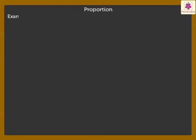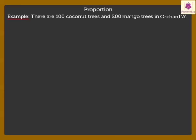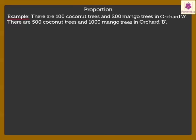Let's look at an example. There are 100 coconut trees and 200 mango trees in Orchard A. There are 500 coconut trees and 1000 mango trees in Orchard B. Is the ratio of coconut trees to mango trees in both orchards the same?